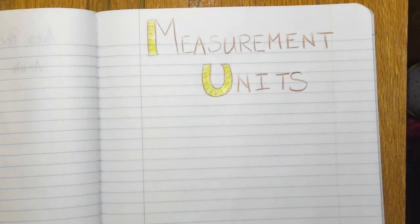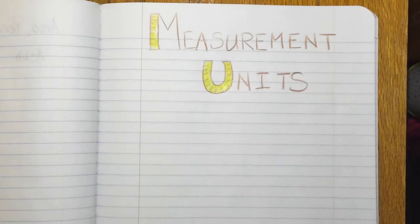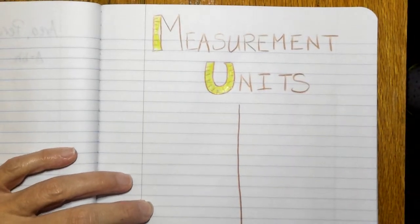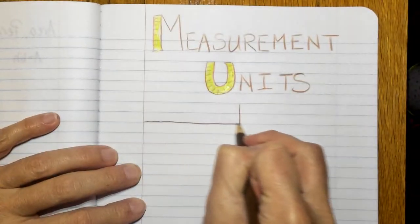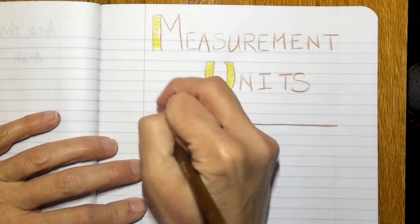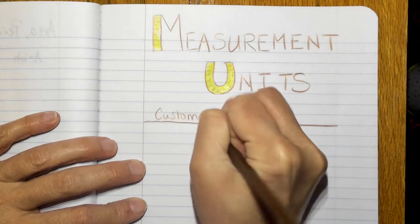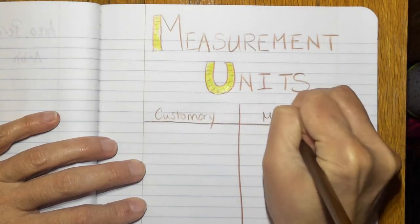This is a video on measurement units and in this video we are going to talk about two different kinds of measurement units. We're going to talk about customary and we're going to talk about metric.